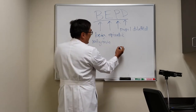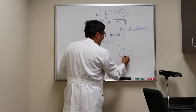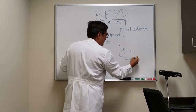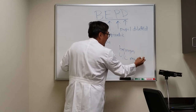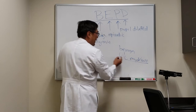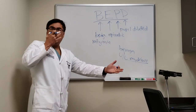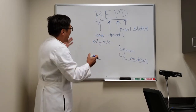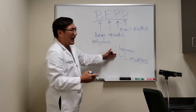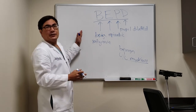BEPD is also known as benign unilateral mydriasis. It can occur in an alternating fashion — one eye and then the other eye — but it is unilateral. And I don't image this.